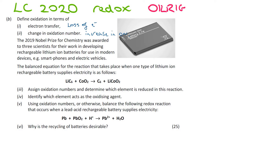The next part of the question: we've got a balanced equation where we're asked to assign oxidation numbers and determine which element is reduced in the reaction. I'm going to write that out again, which you would be doing in your script anyway. We have lithium carbide plus cobalt oxide forming carbon and this compound.